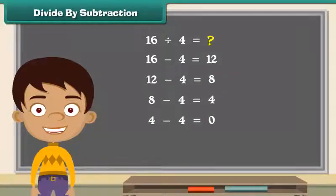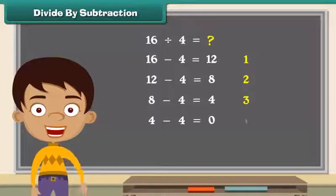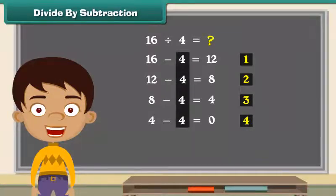Remember to keep subtracting till we get 0. Let us now see how many 4s have been subtracted: 1, 2, 3, 4. Four 4s have been subtracted.